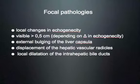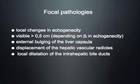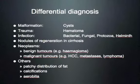When we can see focal pathologies depends on the difference in echogenicity. If they are significantly different from the surrounding tissue, they might be visible when very small — say smaller than half a centimeter. When they blend in more to the tissue, you need larger lesions to see them. When subcapsular, they can cause external bulging of the liver capsule and displacement of hepatic vessels.